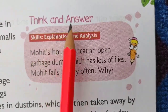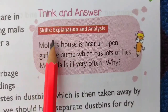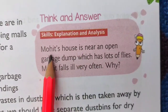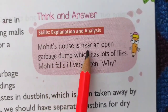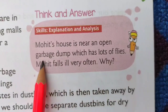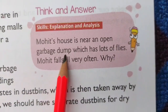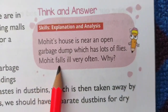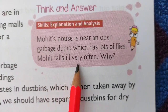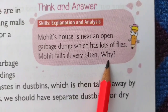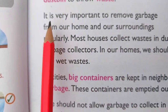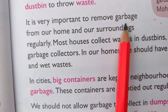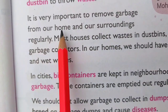Think and answer — Skills, explanation and analysis: Mohit's house is near an open garbage dump which has lots of flies. Mohit falls ill very often. Why? It is very important to remove garbage from our home.